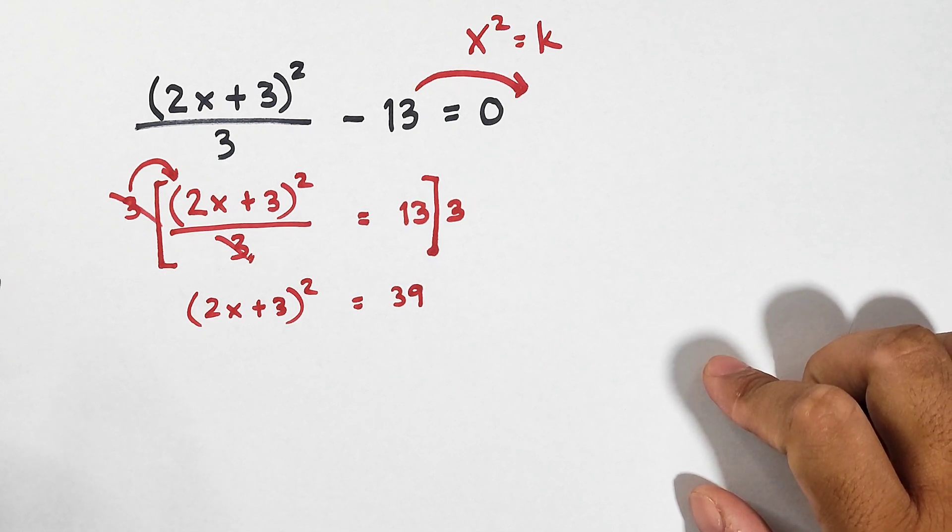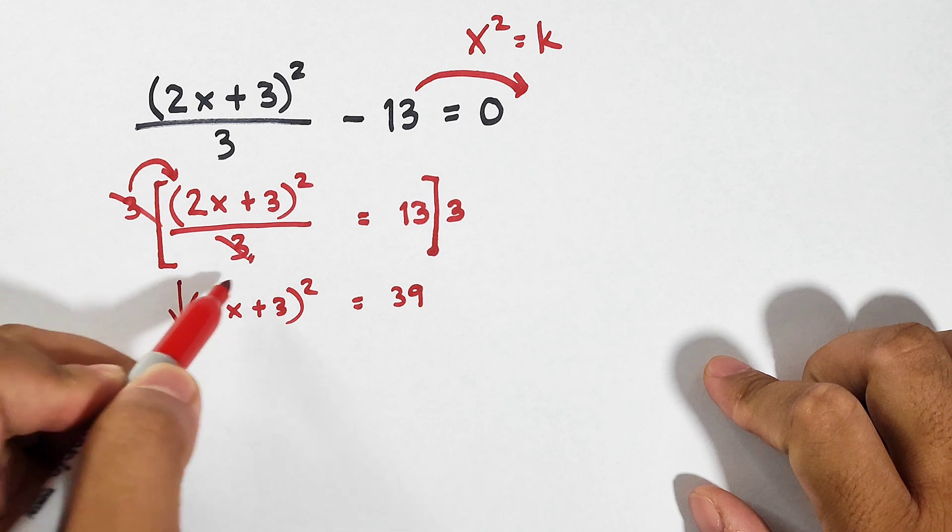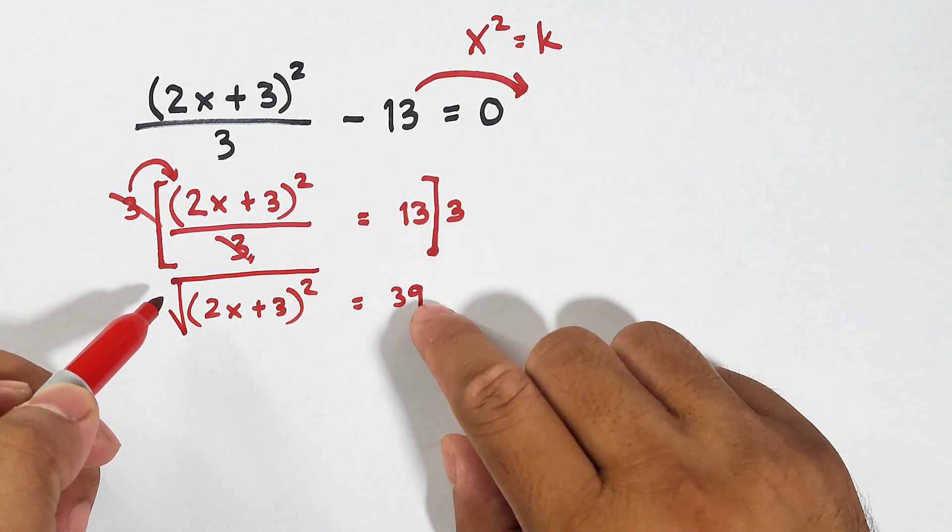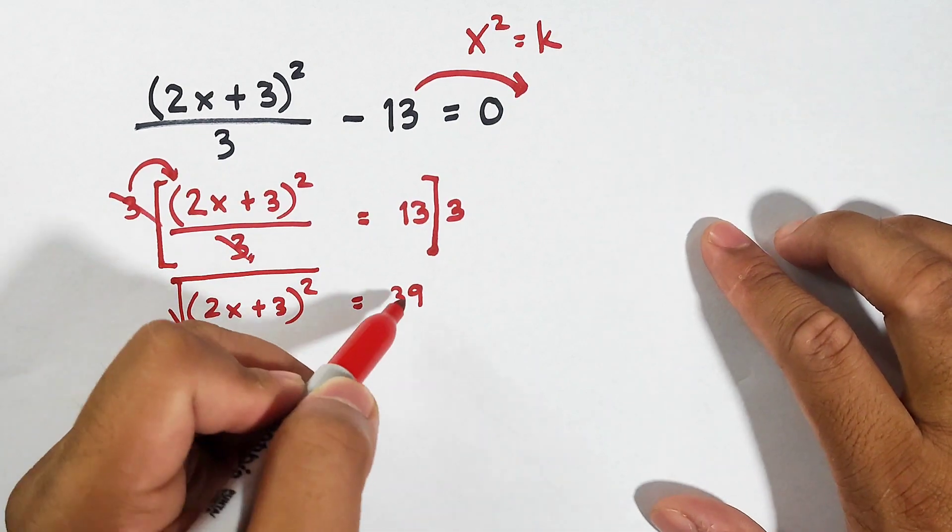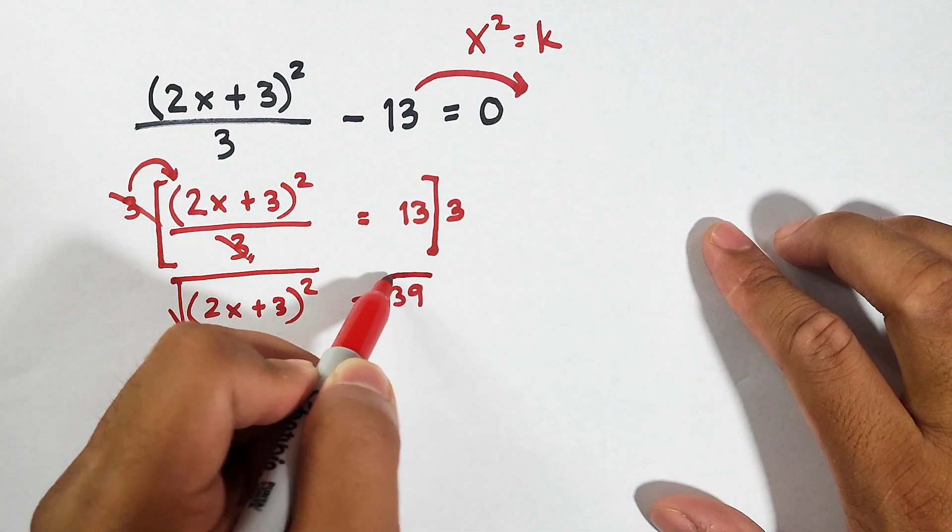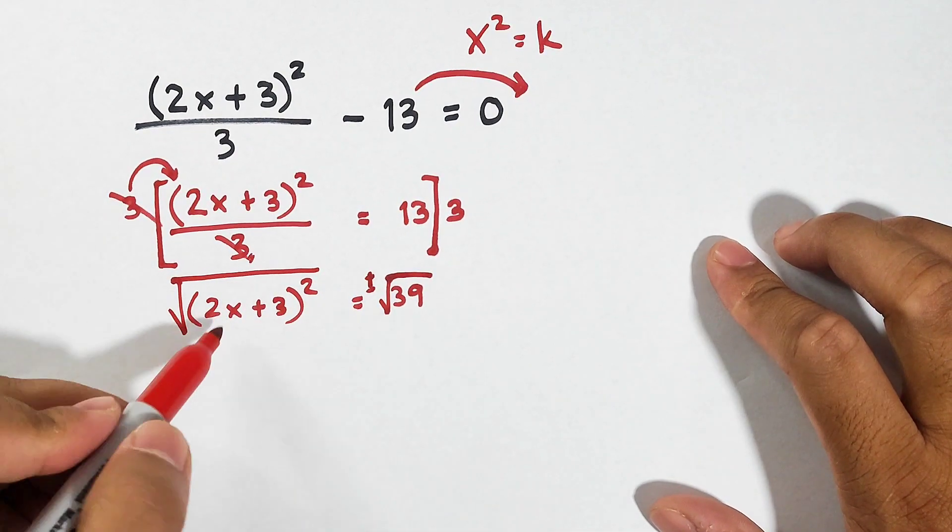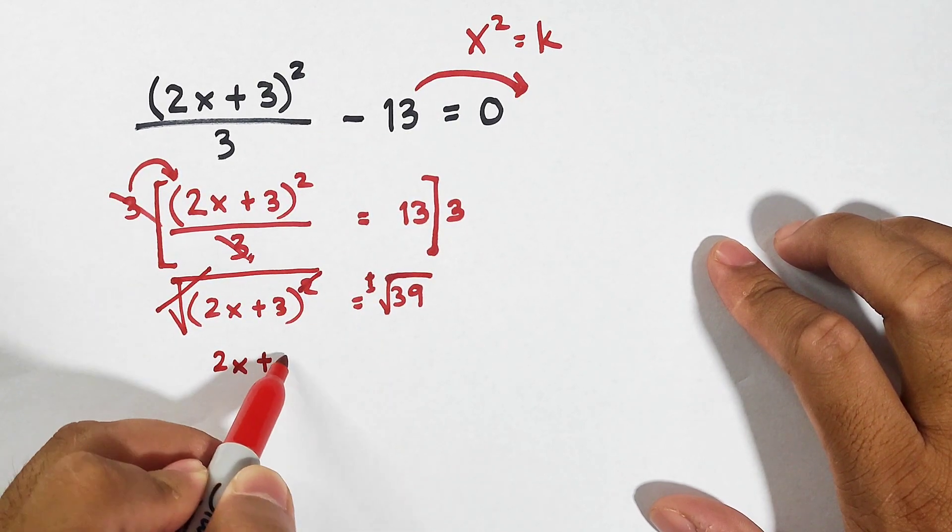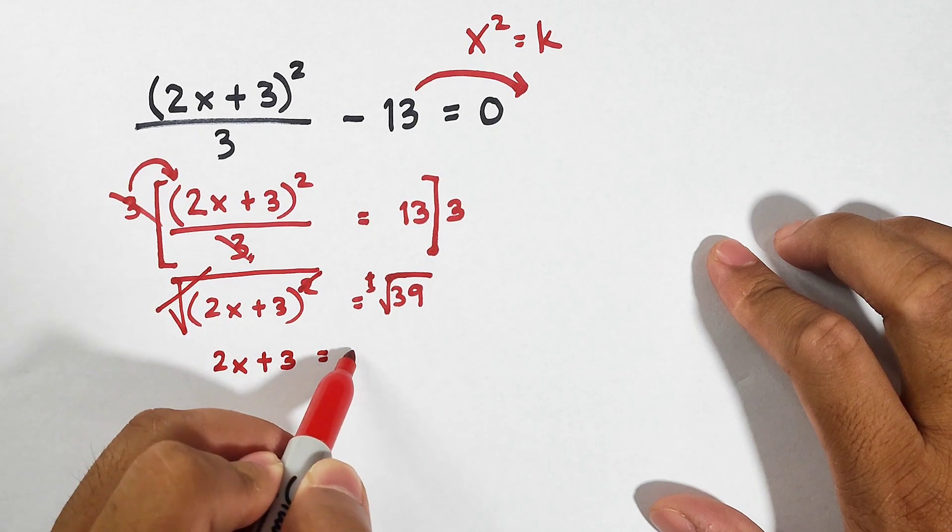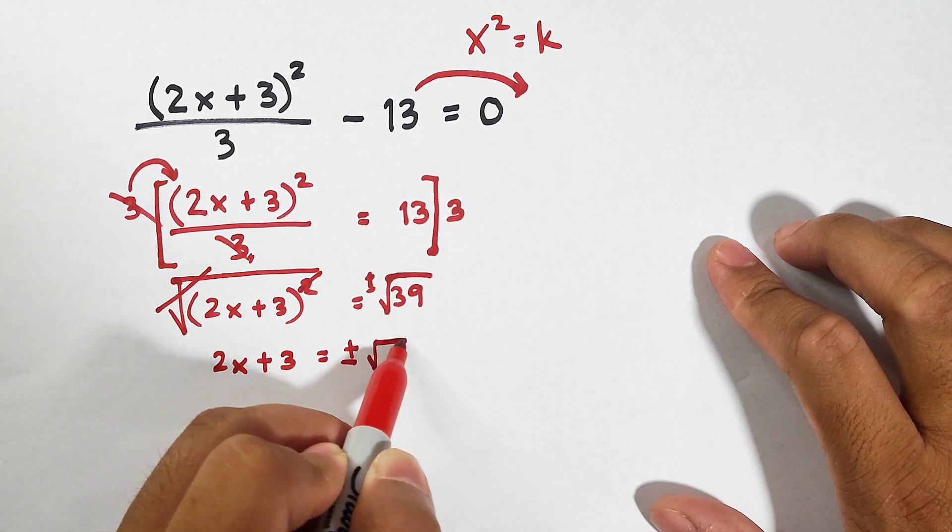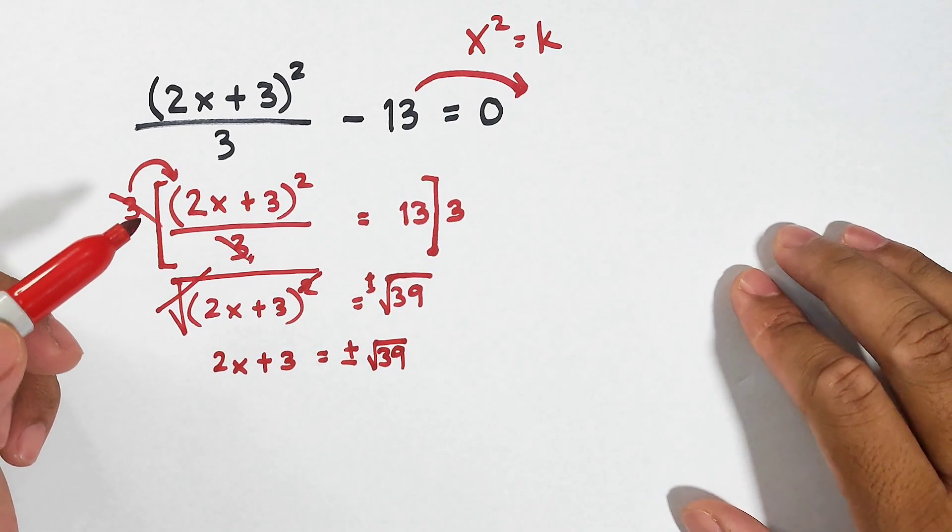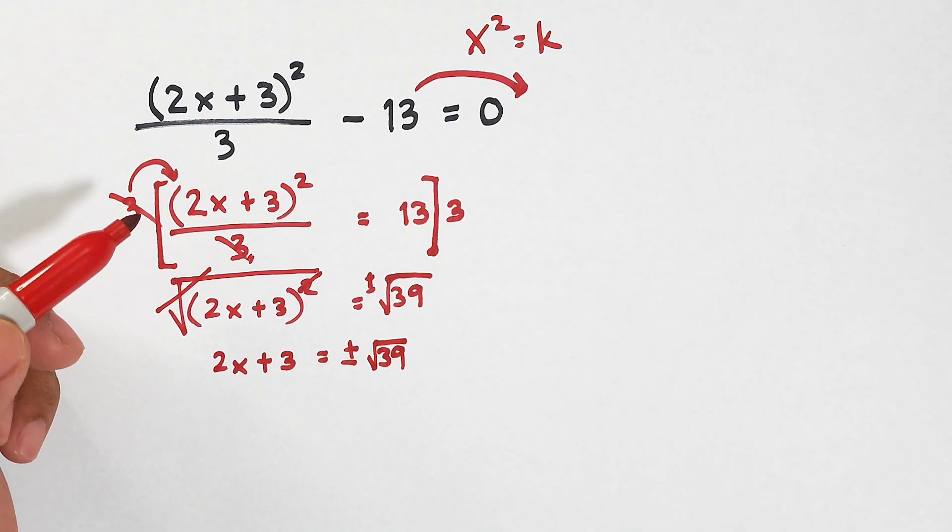So what's next? Extract the square roots because they're the same, guys. This is x squared, 39 is k. Get the square root of this one and then positive negative. Cancel, cancel, you have 2x plus 3 is equal to positive negative square root of 39. So did we make any mistakes in our steps? I don't think so.